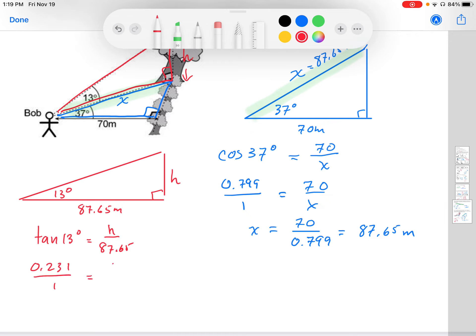That's implied that it's compared to 1. So if I multiply that, I'm just going to solve for h now. That will give me the height. So solving for h, I get 0.231 times 87.65. That gives me 20.24 meters.